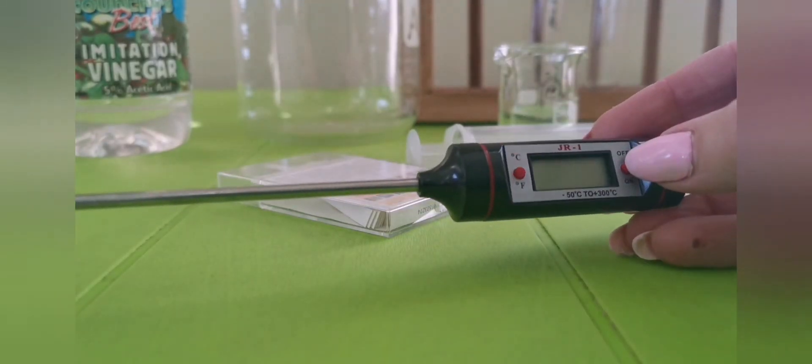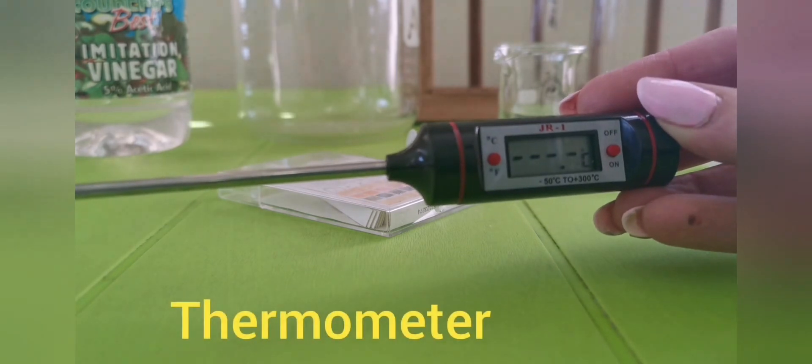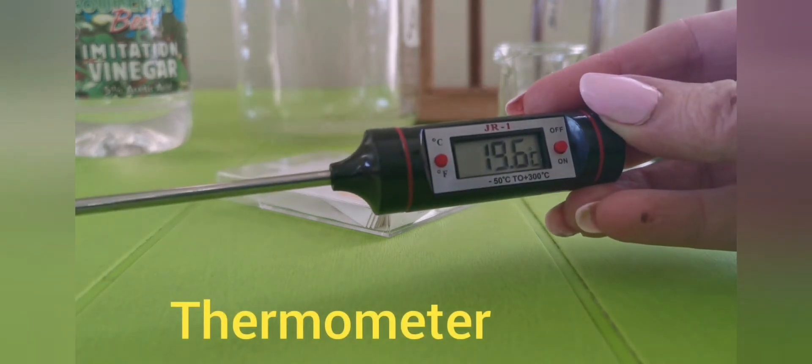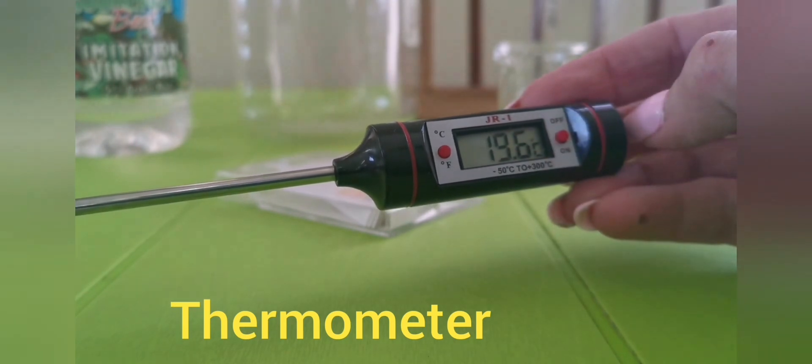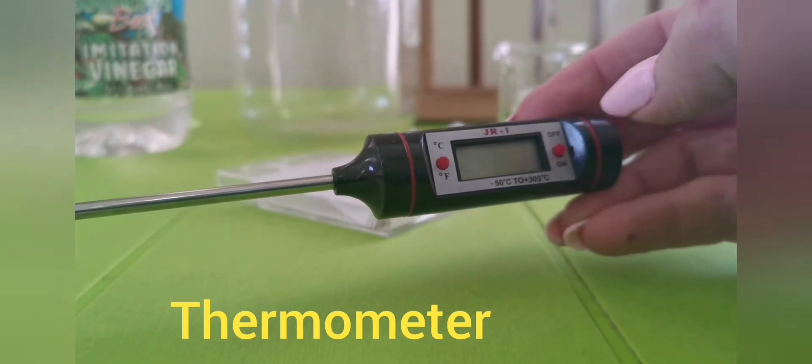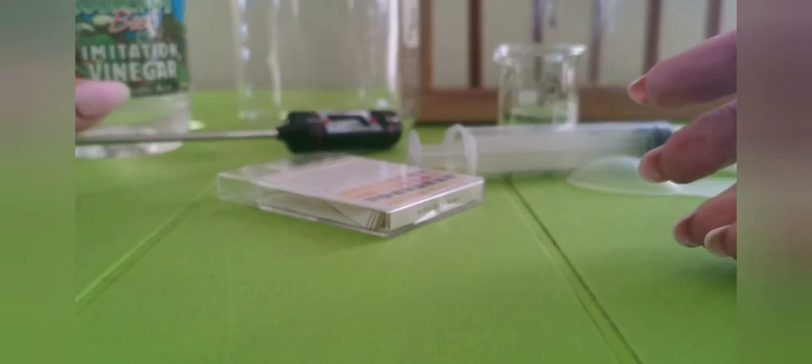This instrument is called a thermometer. It's an electronic thermometer. So you're going to press the red button on the right hand side. You can see the temperature reading is 19.6. There it goes to 19.5 degrees. When you're done, you switch it off.